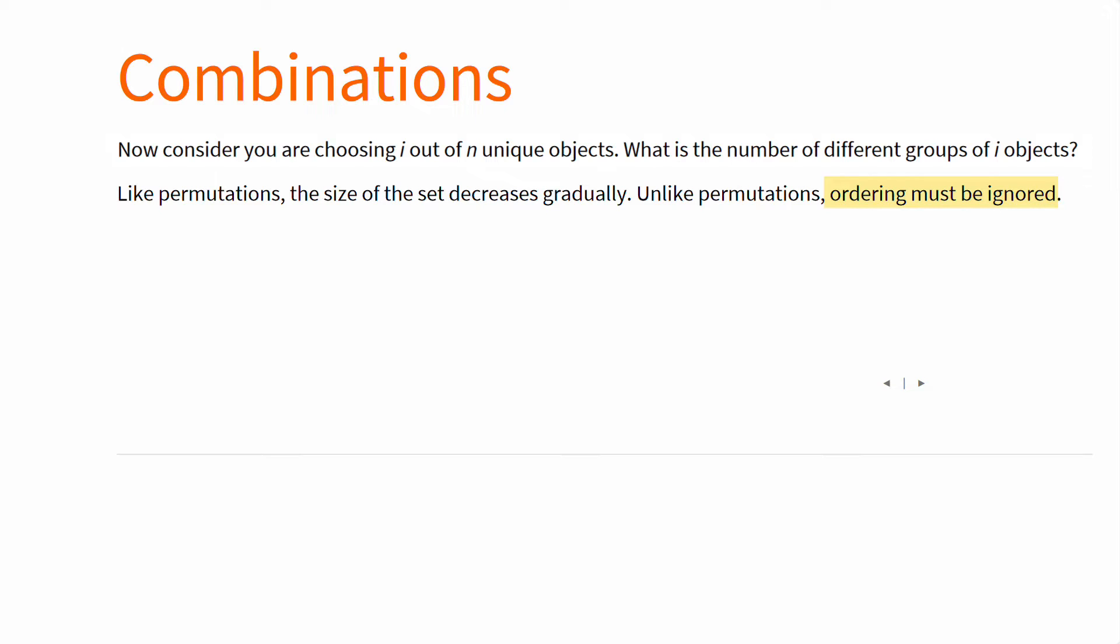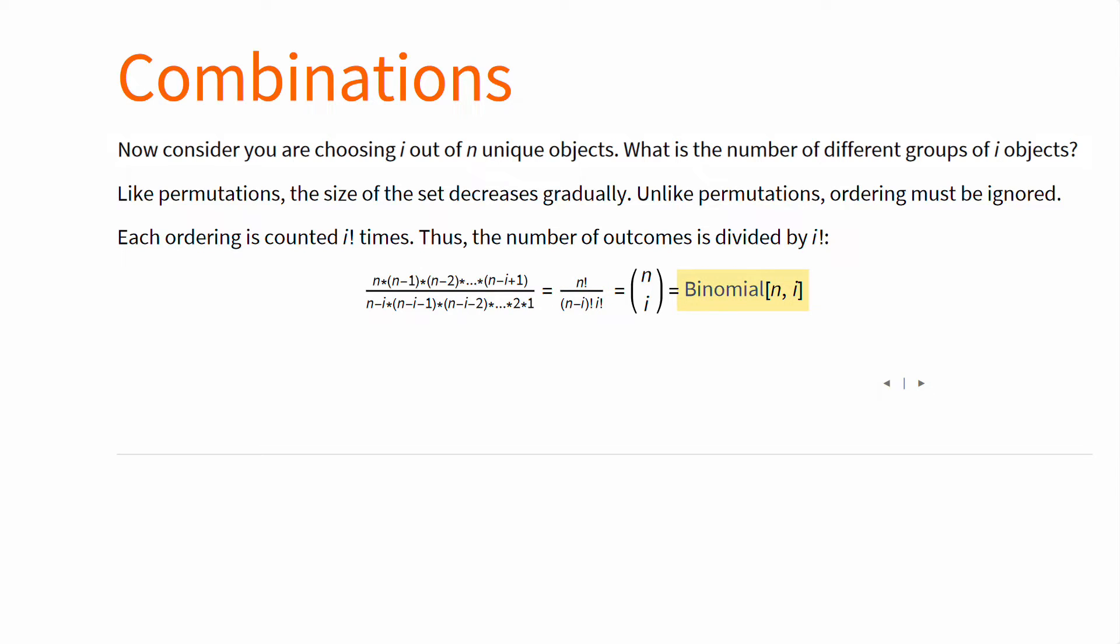So let's think about this for a second. Each ordering is counted i factorial times. Thus the number of outcomes is the number of permutations divided by i factorial. And indeed it's the case. The number of groups is this mathematical formula, or the binomial for short.